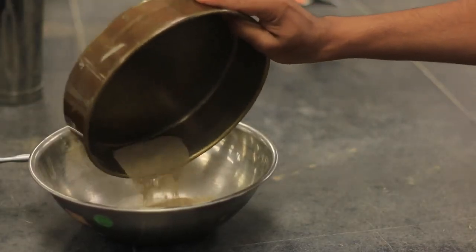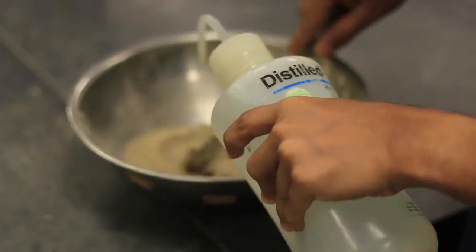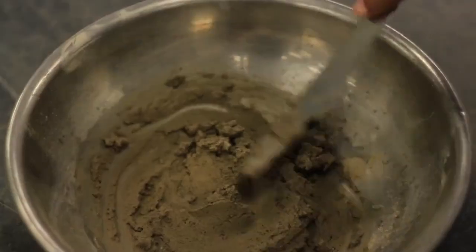Put about 250 grams of air dried soil into an evaporating dish and add a little water with a plastic squeeze bottle to form a uniform paste.